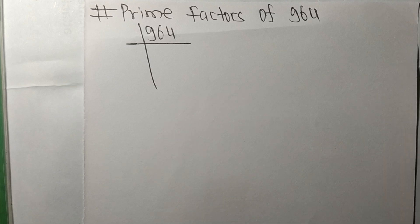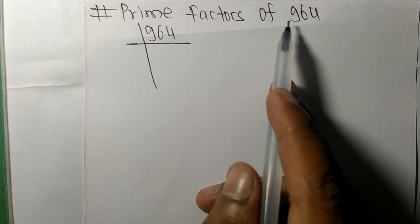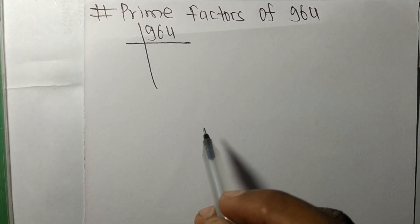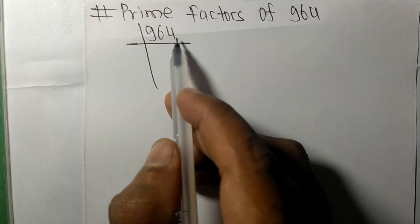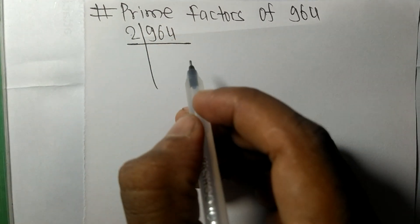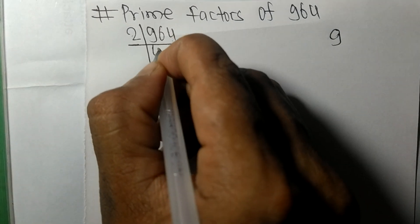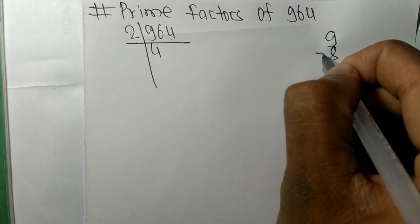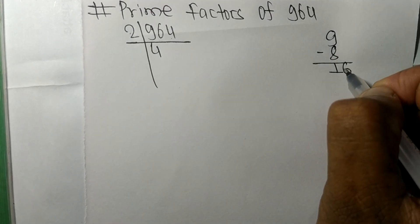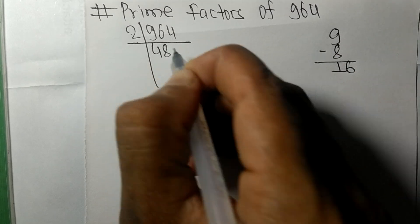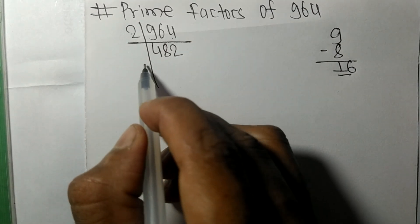Today we shall learn to find the prime factors of 964. Since it contains 4 at the end, this whole number is divisible by 2. 2 times 4 is 8; subtracting we get 1, then 16; 2 times 8 is 16, and 2 times 2 is 4.